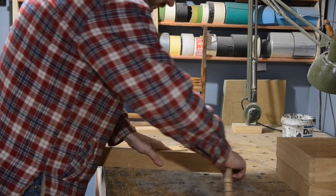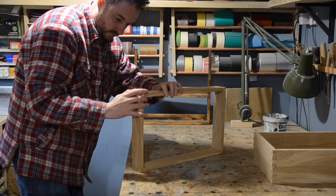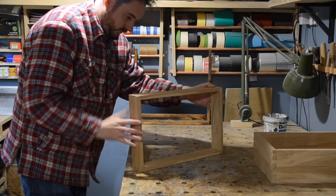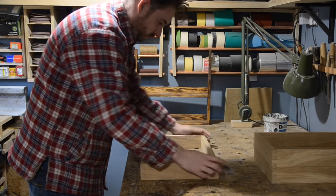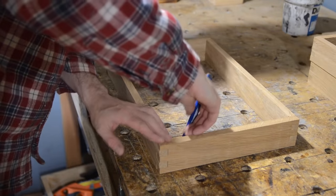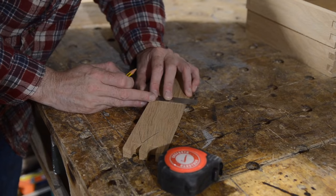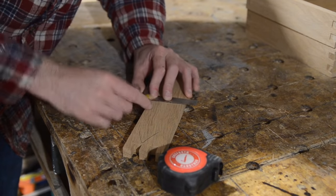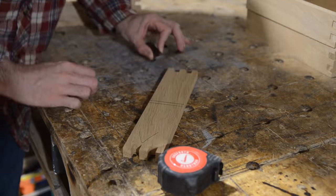Before I get this all glued up, I'm going to have a dry fit because I need to work out where the shelf needs to go. With it put together, I just marked on the bottom corner of both sides, and then I can draw a line on the side pieces where the shelf needs to go.